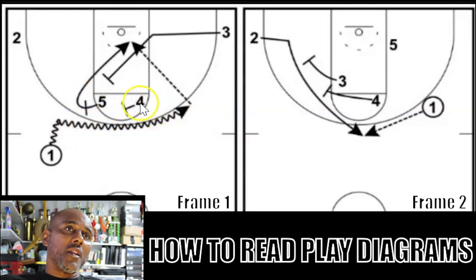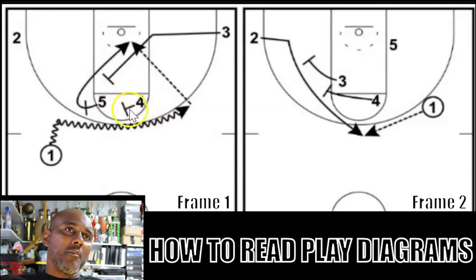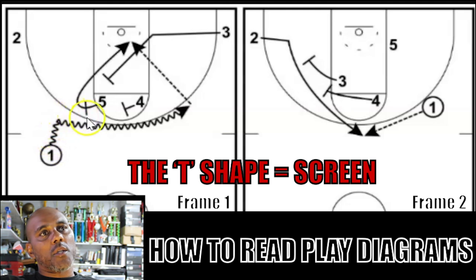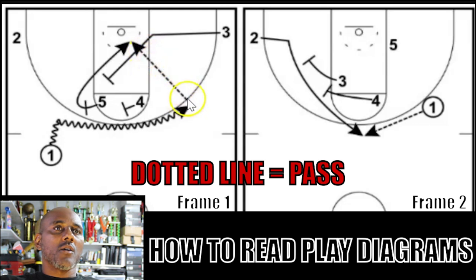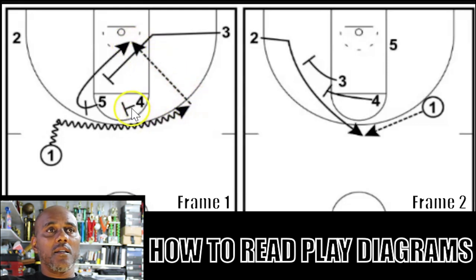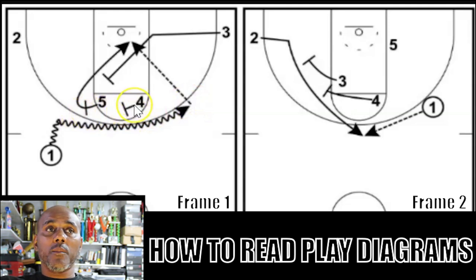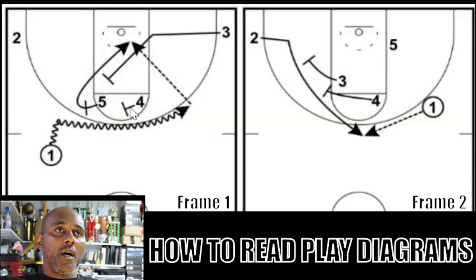In this situation, the four and the five are setting ball screens for the one, and he's dribbling off those screens. When he gets here, he's looking at a pass and potentially actually passing it. Anytime you see this T shape, that's a screen — could be a ball screen, a down screen, a screen away from the ball, whatever. Anytime you see the T, that's a screen.